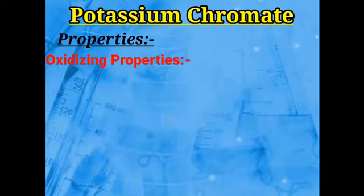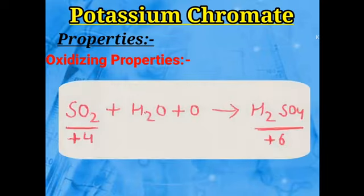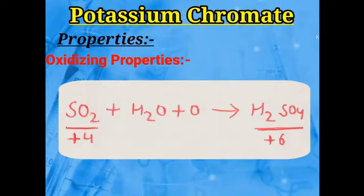In the second example, SO₂ reacts with H₂O and oxygen to form H₂SO₄. In SO₂, sulfur's oxidation state is +4, and in H₂SO₄ it is +6. So the oxidation state changed from +4 to +6 — oxidation of SO₂ to H₂SO₄ occurred.